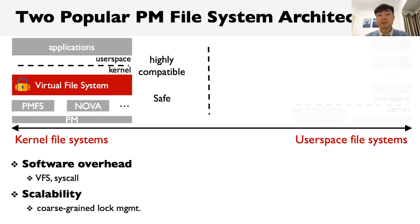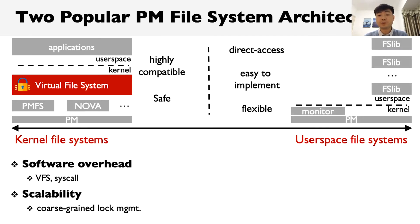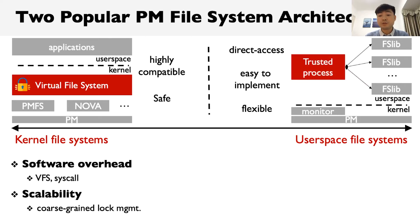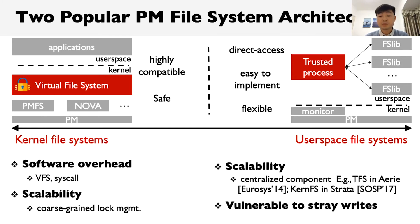To address the problems of kernel file systems, many recent works proposed deploying a file system in user space directly, allowing applications to access file data in user space without introducing software overhead. However, they often introduce a third-party trusted service to handle critical updates such as metadata. As a result, this reintroduced centralized component makes the scalability issue more serious. Moreover, user space file systems are also vulnerable to stray writes — for example, if a buggy program misuses pointers, the PM space can be easily corrupted.